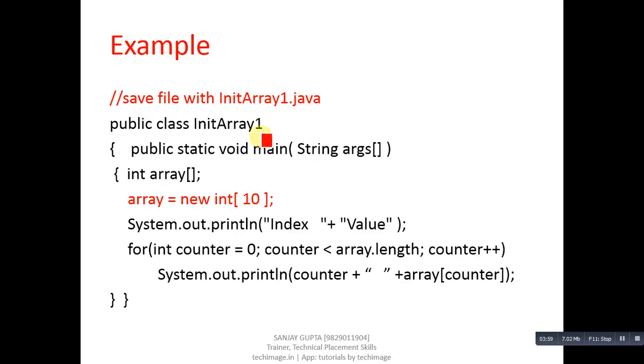Then public class InitArray1, public modifier, then class keyword, then InitArray1 is name of class. Then public static void main, then for command line argument I have used args array which is of string type. String is a class. Main is a method in which I have defined various statements.